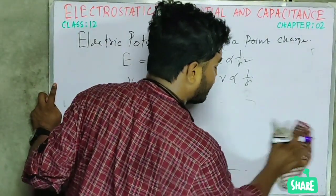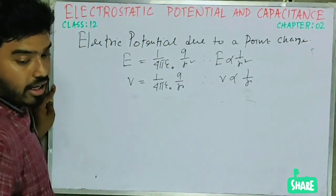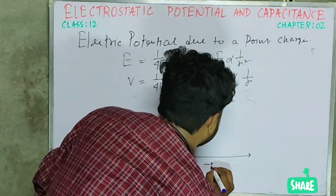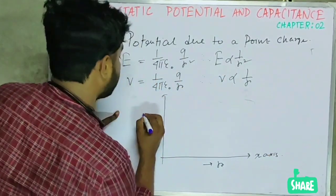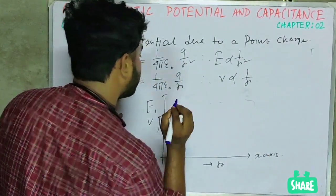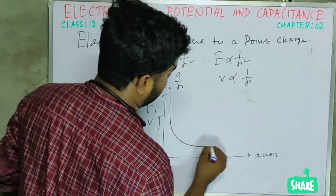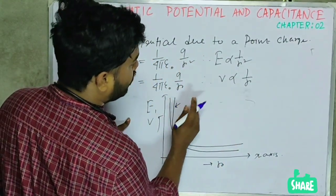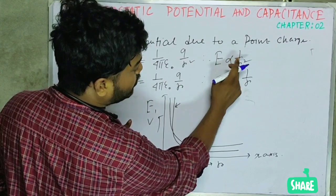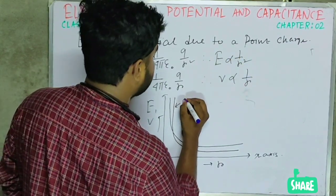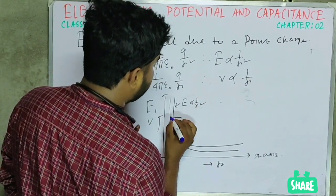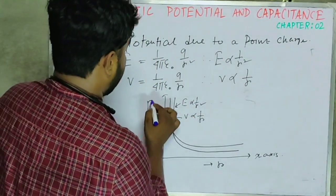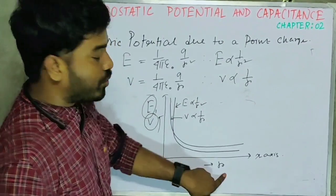If we draw a graph of electric field E and electric potential V versus distance r, along the x-axis is r and along the y-axis are E and V. One curve falls faster (E ∝ 1/r²) and the other falls more slowly (V ∝ 1/r). The steeper curve represents electric field and the shallower one represents electric potential.